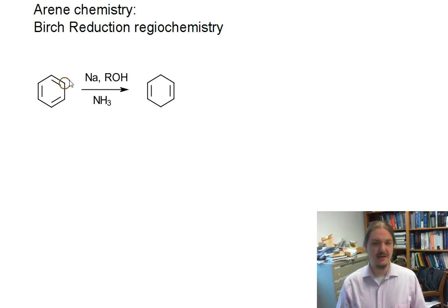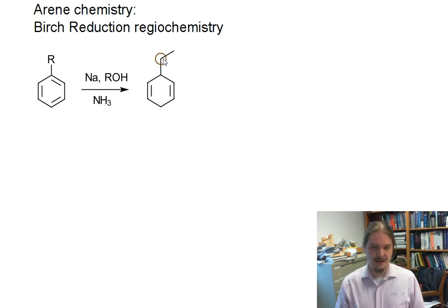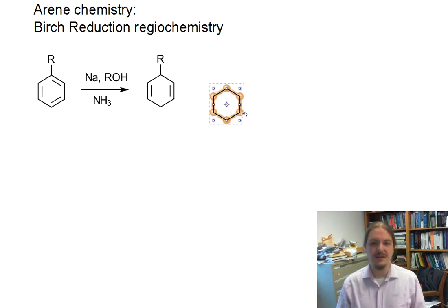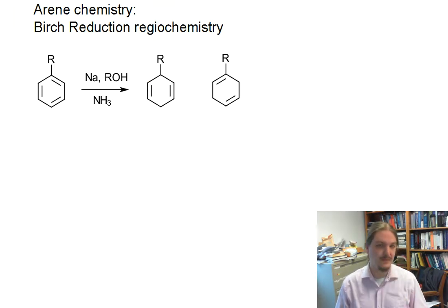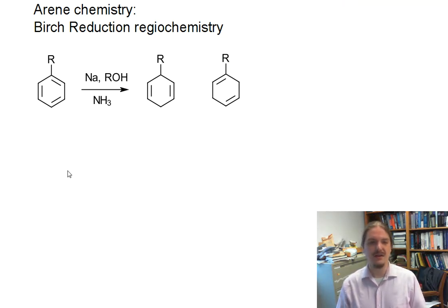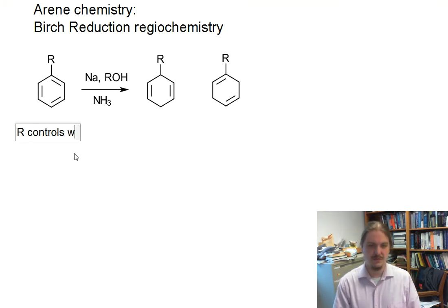The situation can change if we put a substituent on benzene. There are two possible products that could form: one in which the substituent is on one of the new sp3 hybridized or saturated positions, and one in which the substituent is on one of the remaining sp2 hybridized positions. Which one of these predominates depends on the identity of R, so we have an opportunity for regio-selectivity.